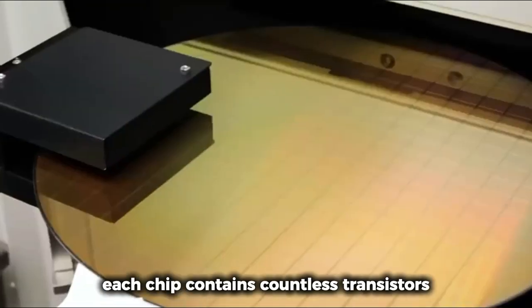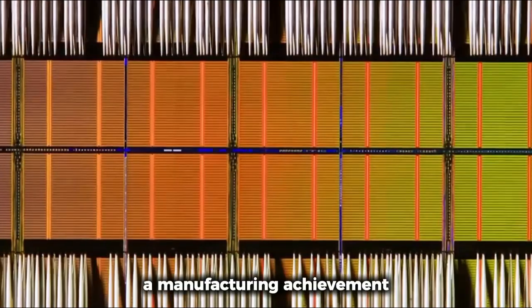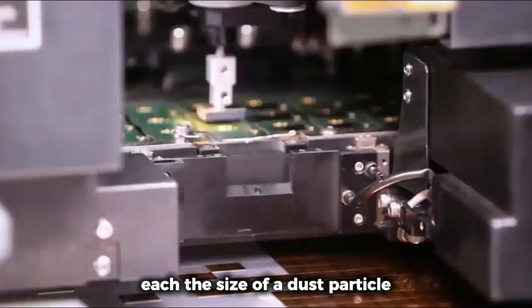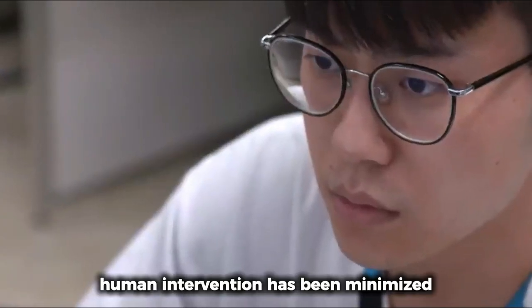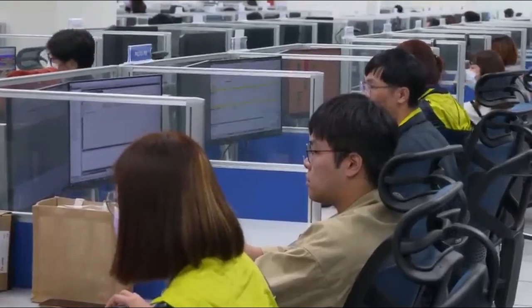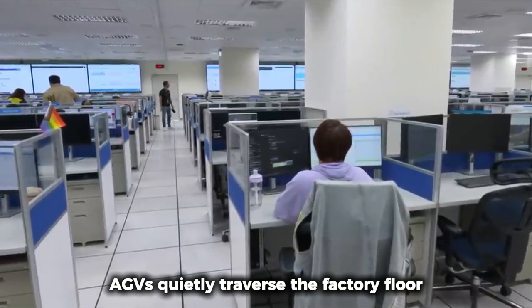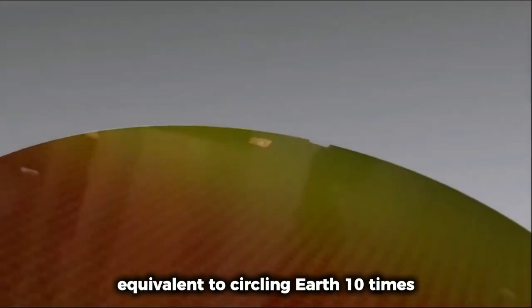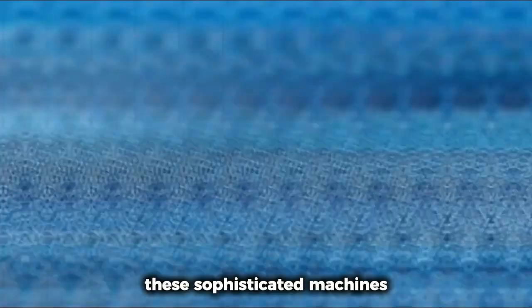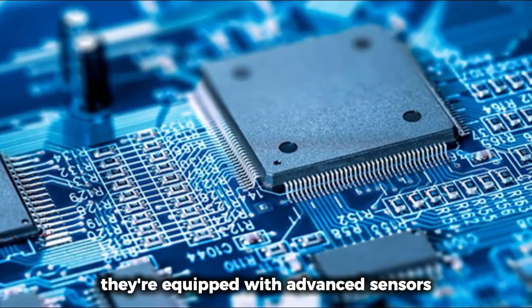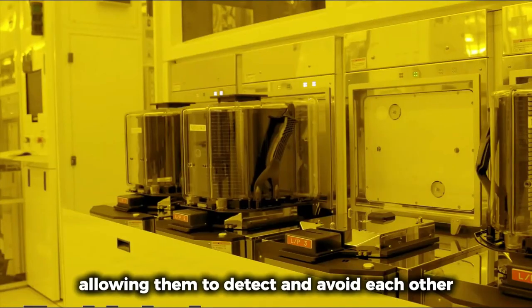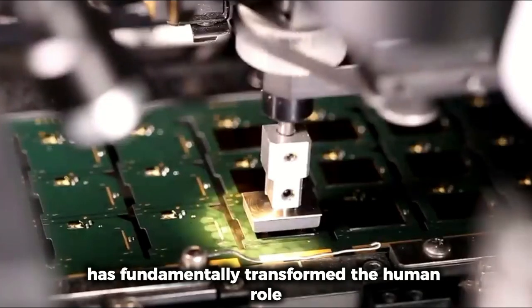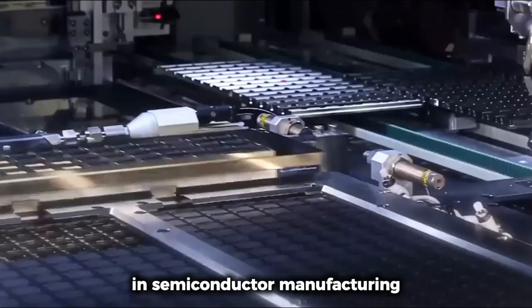What makes this process truly remarkable isn't just the microscopic scale, but the near-perfect accuracy and consistency maintained across billions of components. Each chip contains countless transistors that must function flawlessly—a manufacturing achievement akin to building millions of identical skyscrapers, each the size of a dust particle. To achieve this level of consistency, human intervention has been minimized through extraordinary automation. Thousands of automated guided vehicles (AGVs) quietly traverse the factory floor, collectively traveling nearly 400,000 kilometers daily—equivalent to circling Earth 10 times. These sophisticated machines aren't simply following predetermined paths; they're equipped with advanced sensors allowing them to detect and avoid each other while optimizing delivery efficiency throughout the facility.